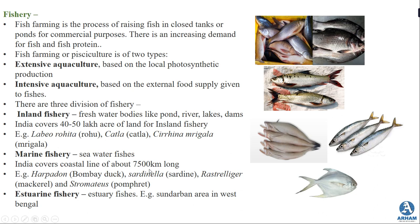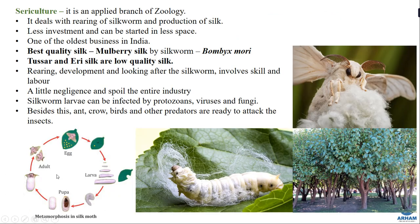Marine fishery refers to seawater fish. India has a coastal line of about 7,500 kilometers long. Common marine fishes are Bombay duck, Sardine, Mackerel, and Pomfret. Estuarine fishes are obtained from estuaries - for example, in the Sundarban area in West Bengal, there is a large estuary, and fishes obtained from that area come under estuarine fishery.